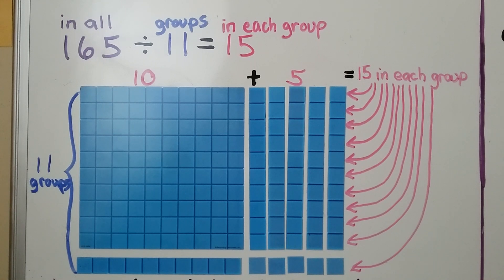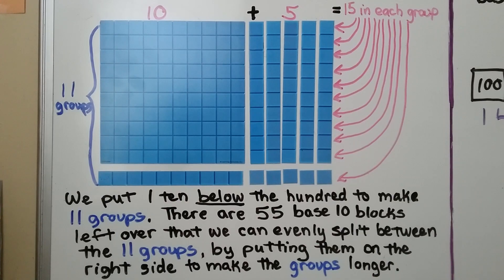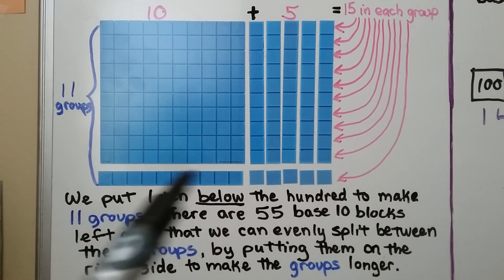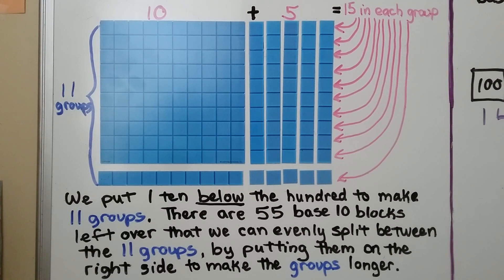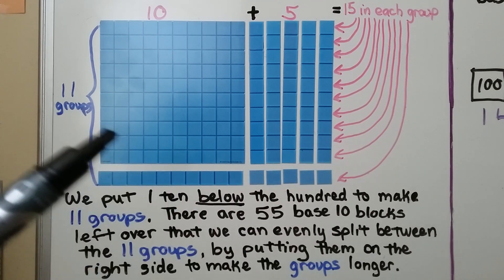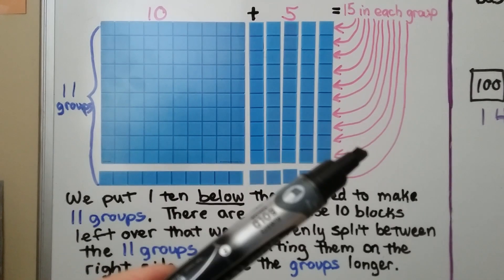165 divided by 11 is equal to 15. We started by putting a 10 below the 100 to make 11 groups, and there are 55 base 10 blocks left over that we can evenly split between the 11 groups by putting them on the right side to make the groups longer.